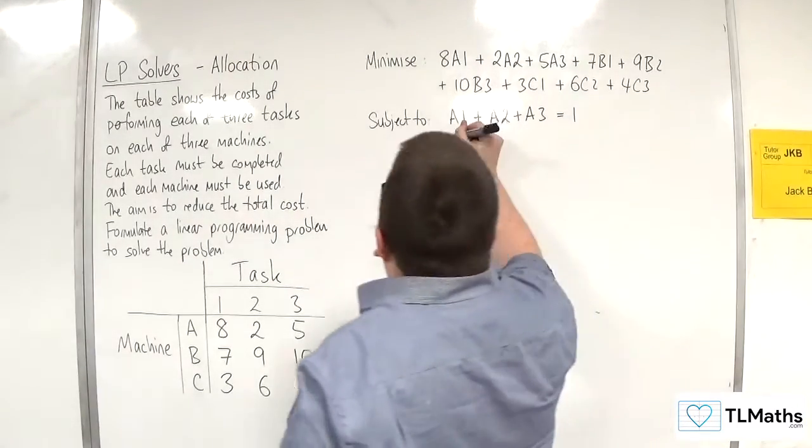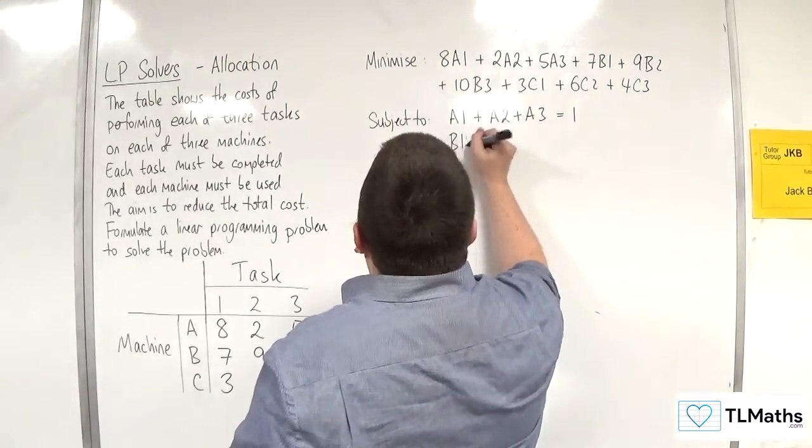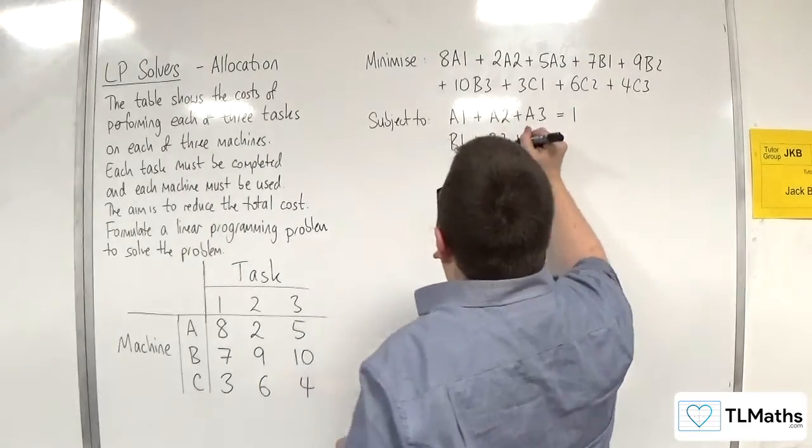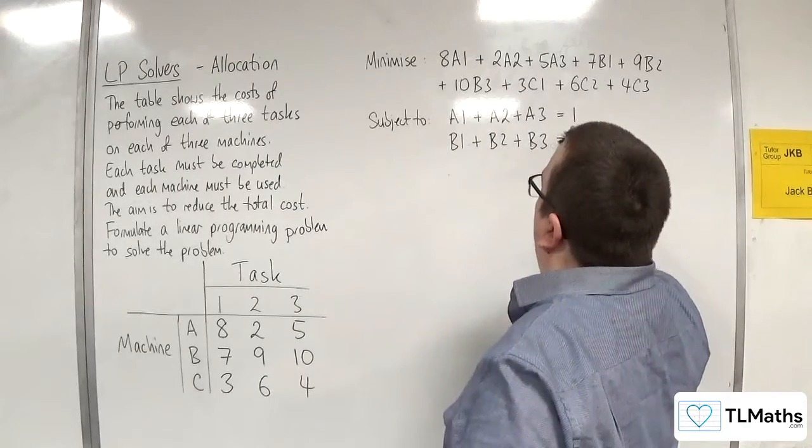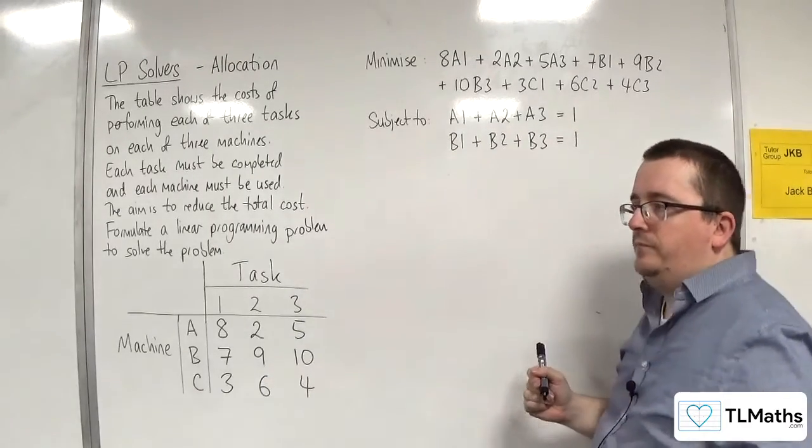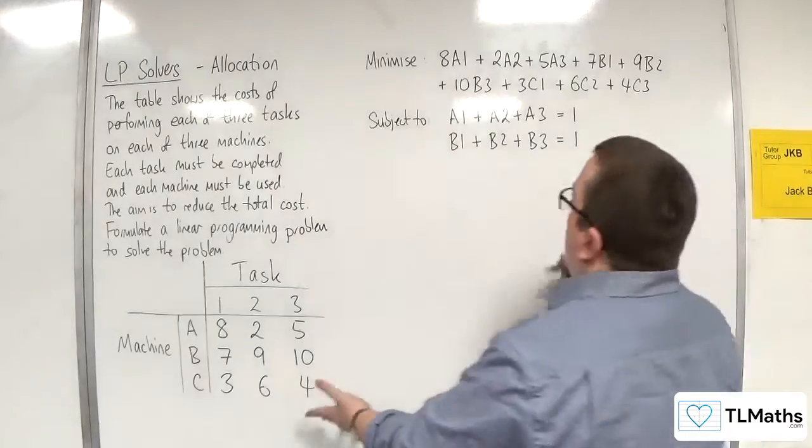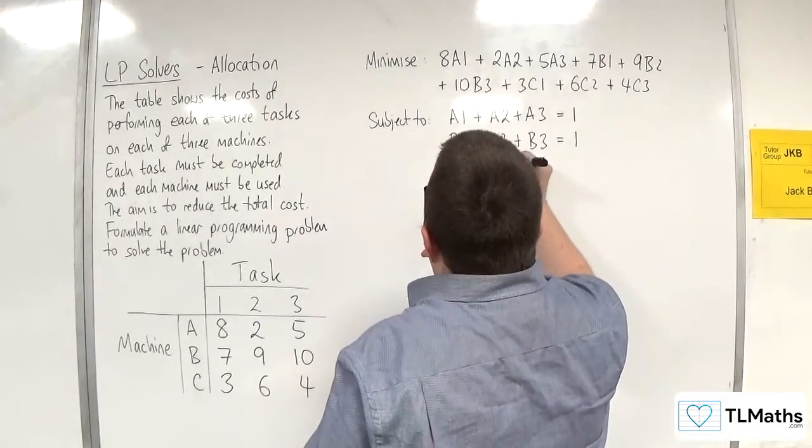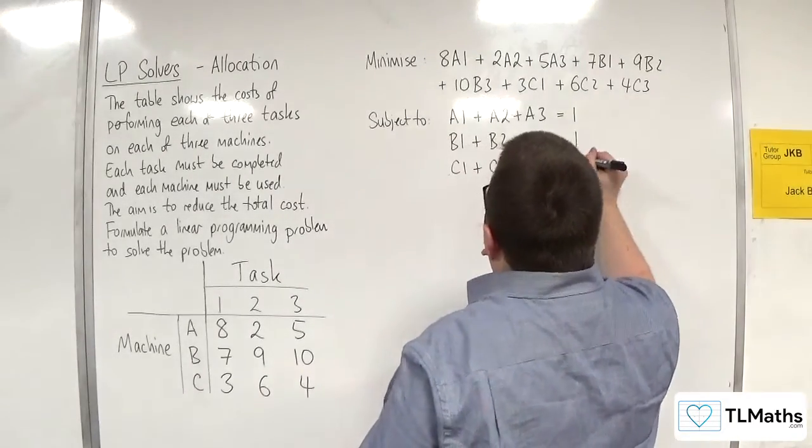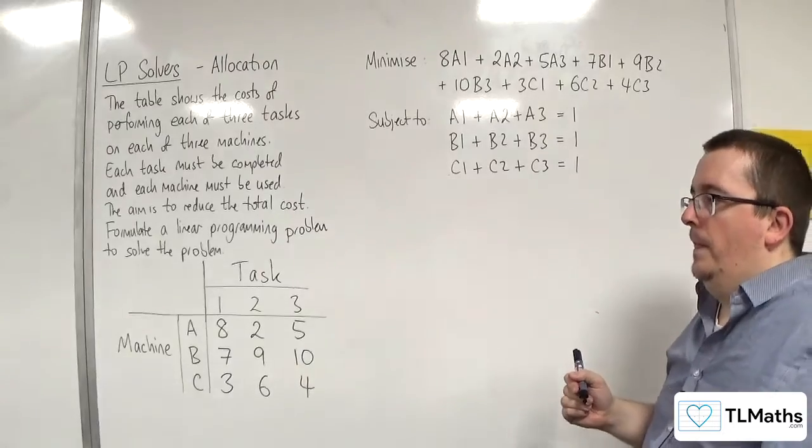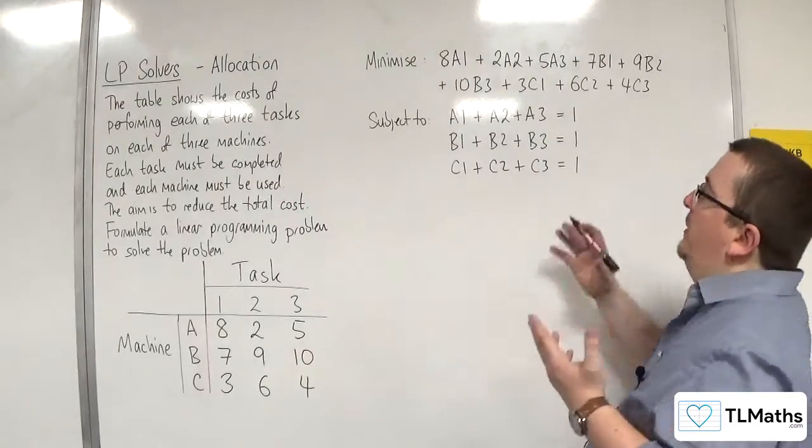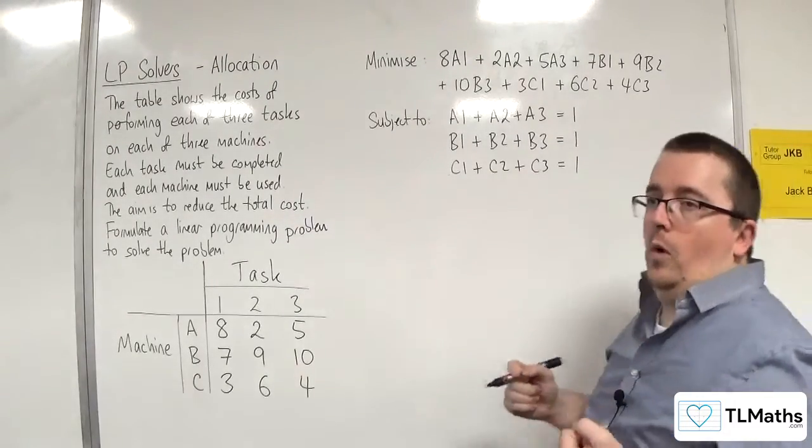So likewise, we must have B1 + B2 + B3 has got to be equal to 1, and C1 + C2 + C3 has got to be equal to 1. So that means that each machine can only do one of the activities.